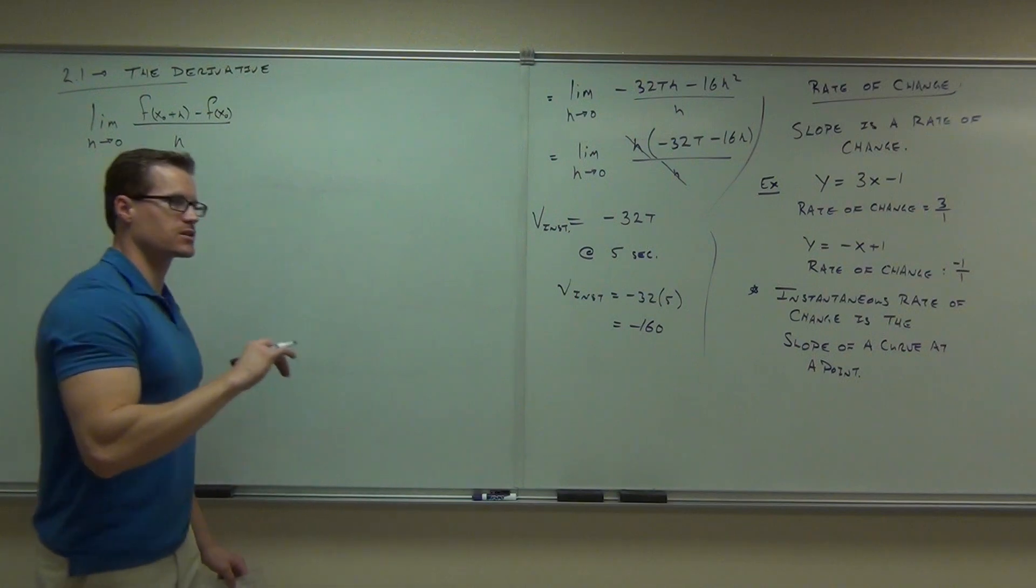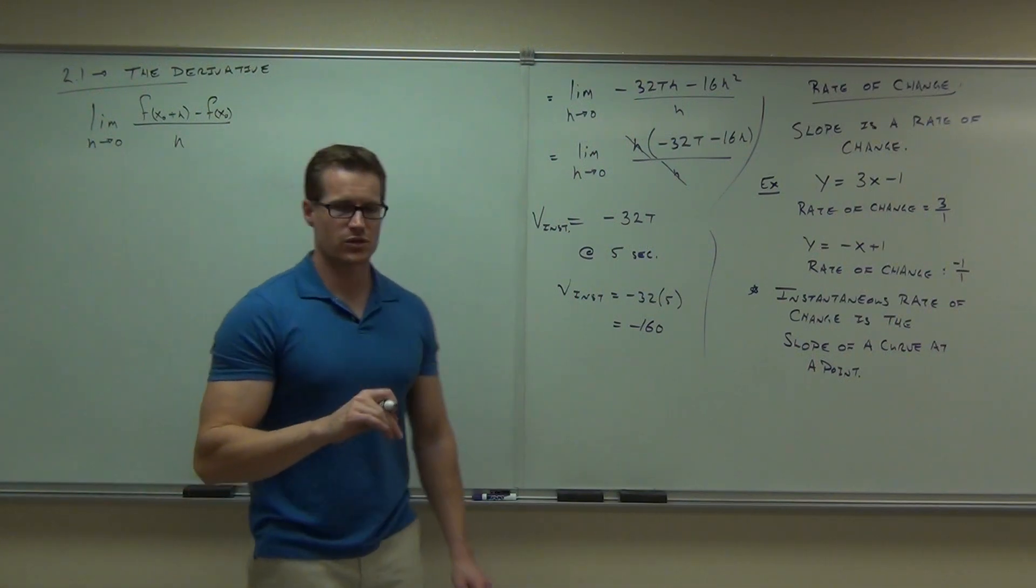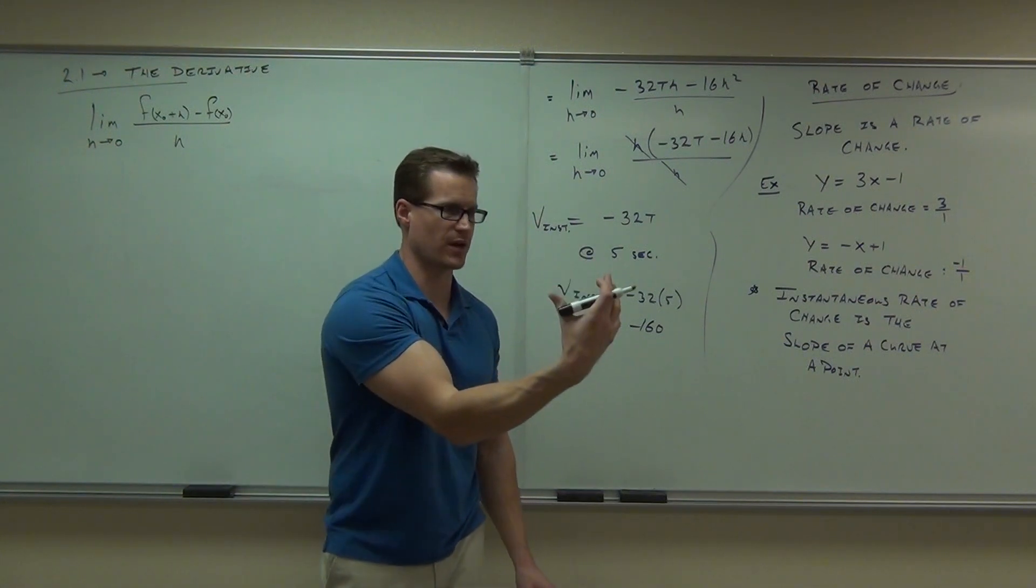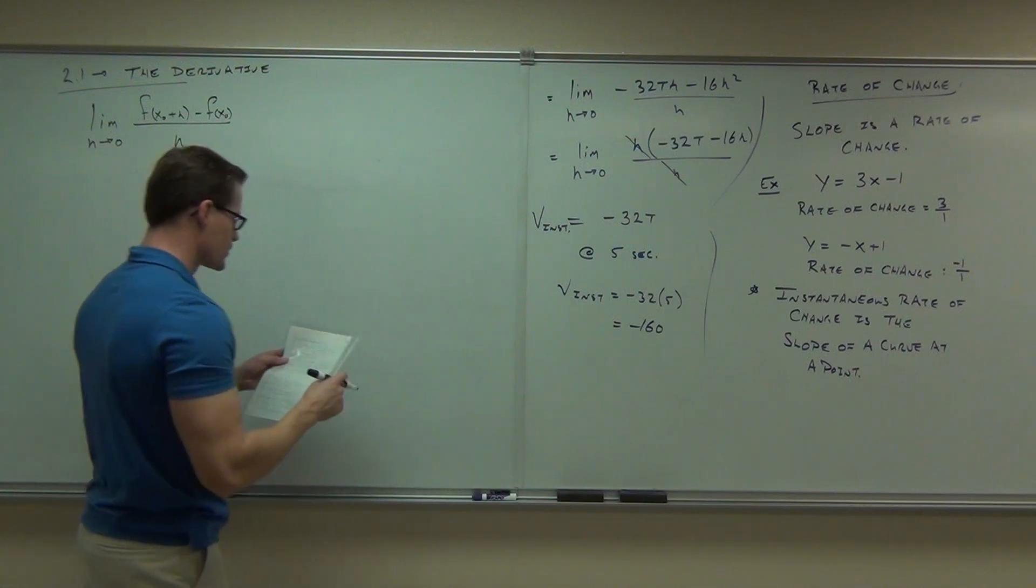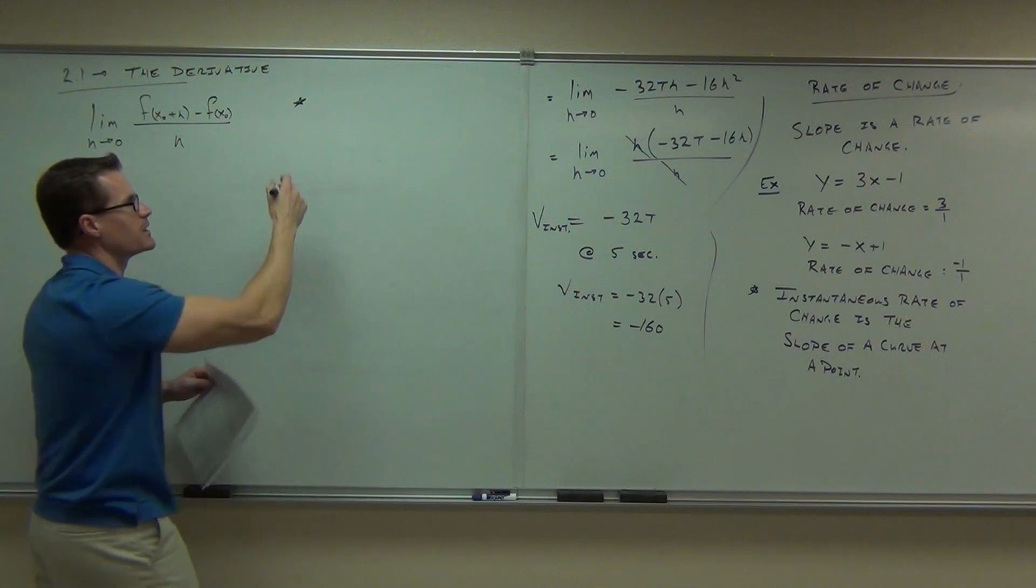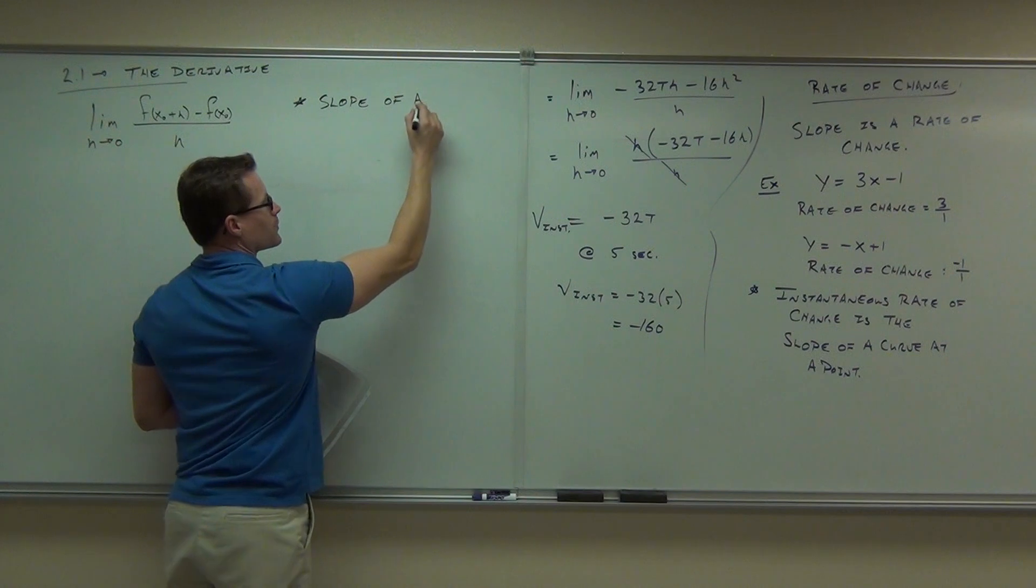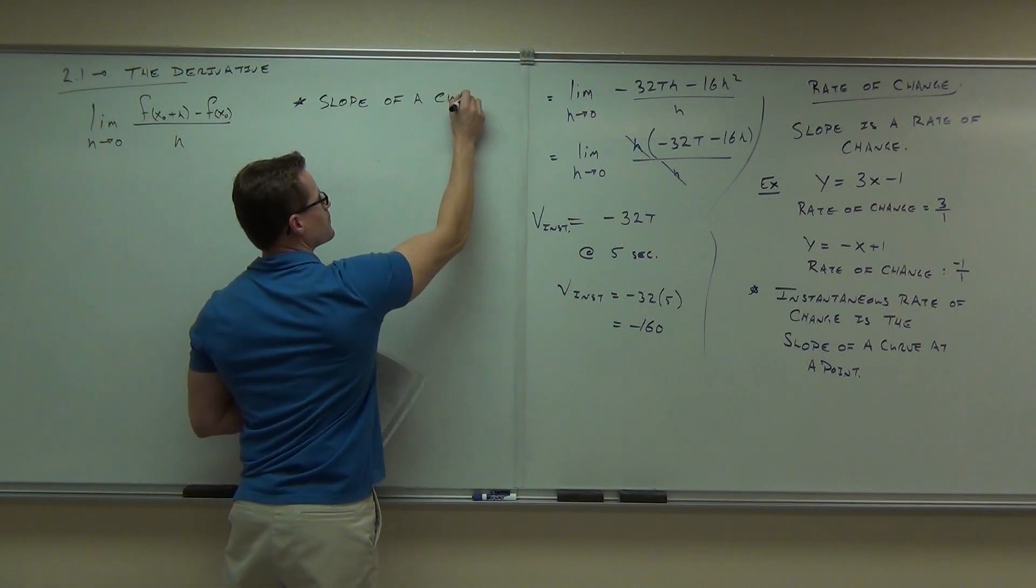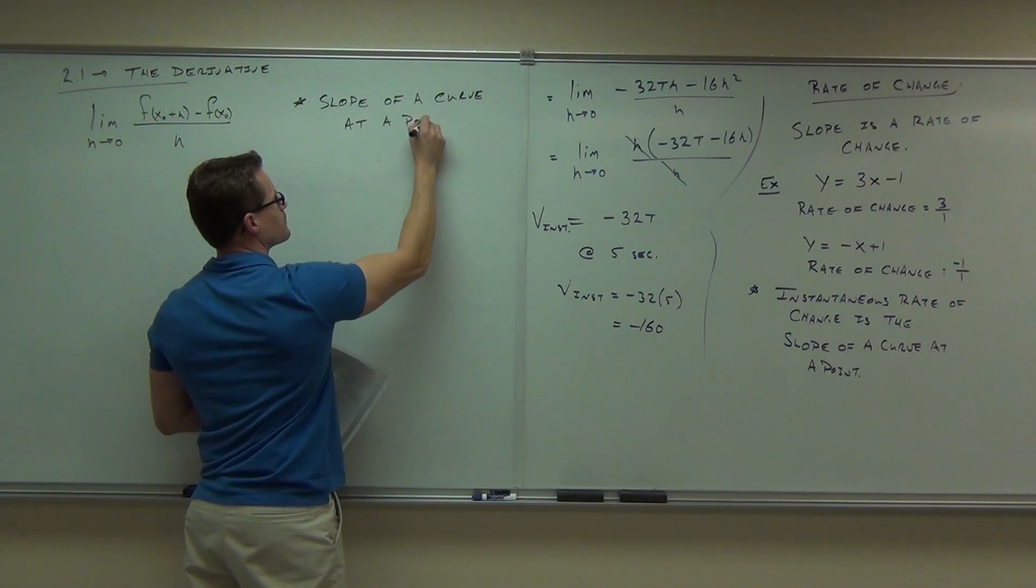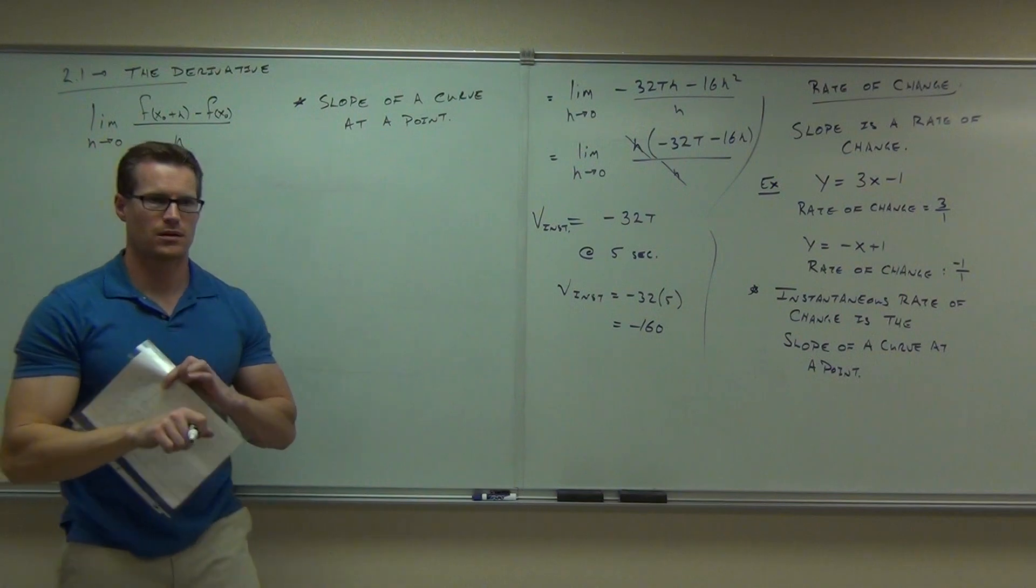We've used this to find the instantaneous rate of change. We've used it to find the instantaneous velocity. We've used it to find the slope of a curve at a point. We've used it to find the equation of a tangent line by finding the slope of that curve and then making an equation out of it. This is the slope of a curve at a point.